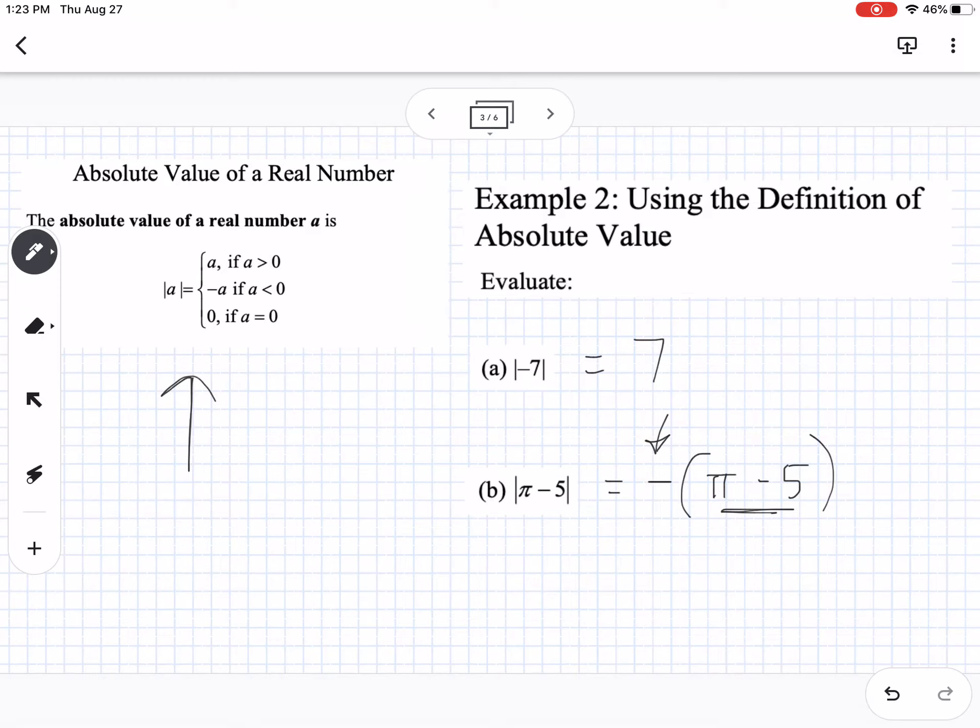So then I could distribute that negative. So I could write this as negative pi plus five. So that would be, or we could put an approximation, but it wanted an exact value.